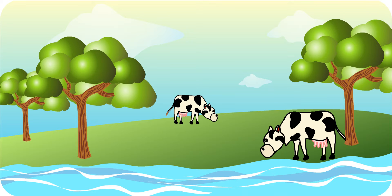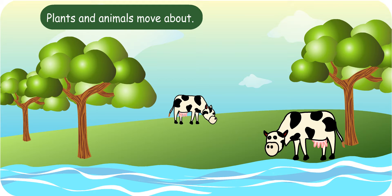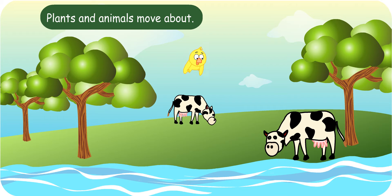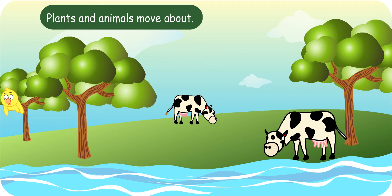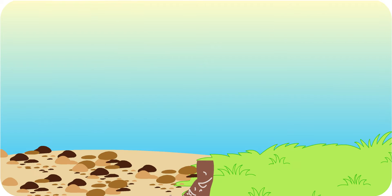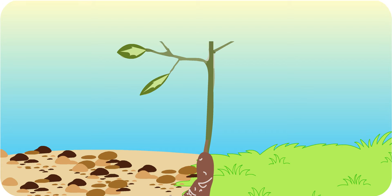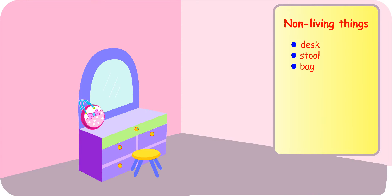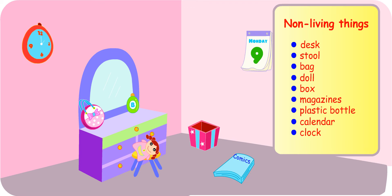Do you know that both plants and animals move about? Plants move? I know that animals move around, but how do plants move? Animals move from place to place to look for food and water. Plants move in a different way — they do not move from place to place like animals. Only some parts of the plants move. For example, the shoot or stem of plants grows towards the sky to get sunlight. The leaves of a mimosa plant close when touched. However, non-living things do not move by themselves.